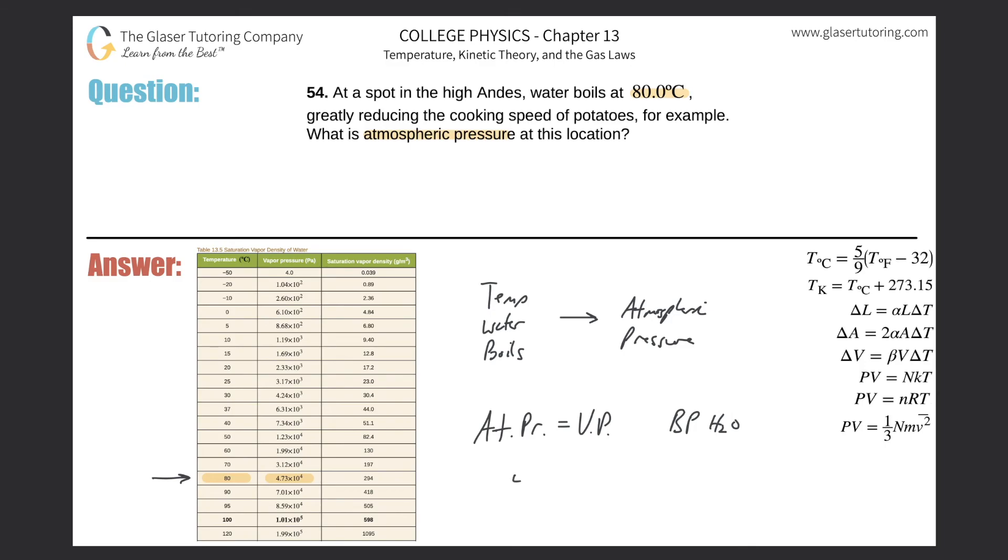Anyway, to just give you the answer here - well, I was going to say quickly, but I don't know if this is so quickly - it's 4.73 times 10 to the fourth Pascal. That would be the atmospheric pressure. Alright guys, thanks for tuning in. Hopefully this helps. Subscribe and hit the like button if you can. Take care.